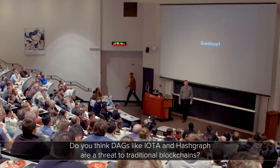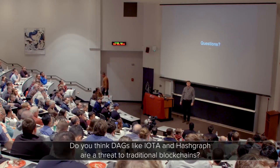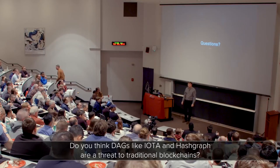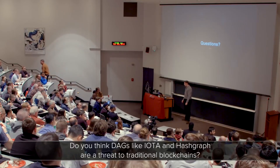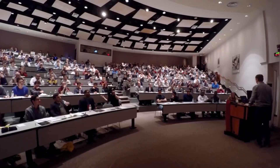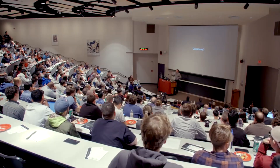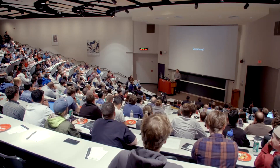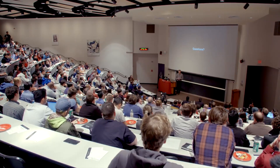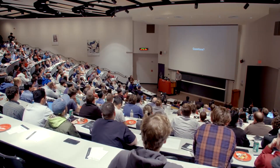Do you think DAGs like IOTA and Hashgraph are a threat to traditional blockchain? So the question is about DAGs — what is that? That is where, rather than having a chain of blocks that are linked together, every transaction links to previous transactions. Now you have a graph of things that are all linked together, and you can run that graph to determine an order.